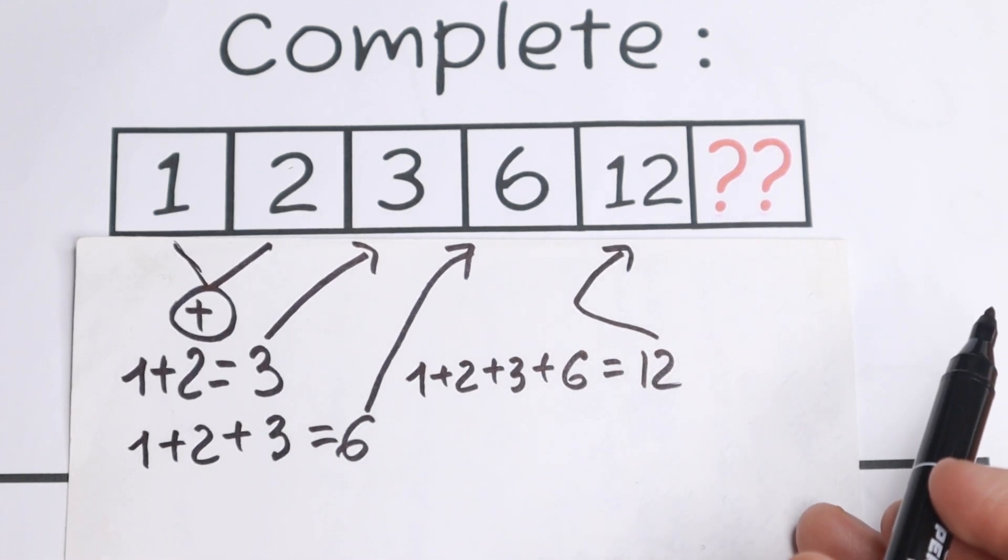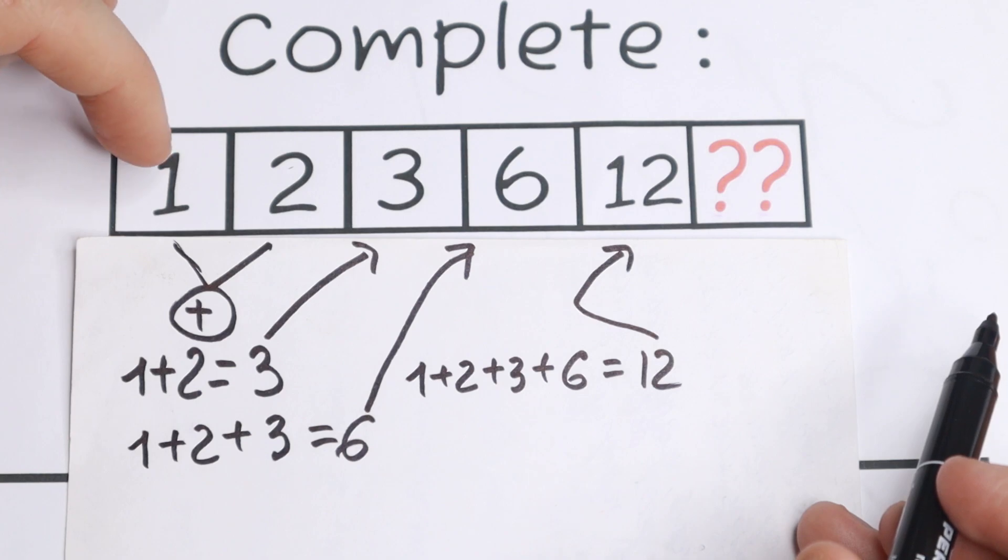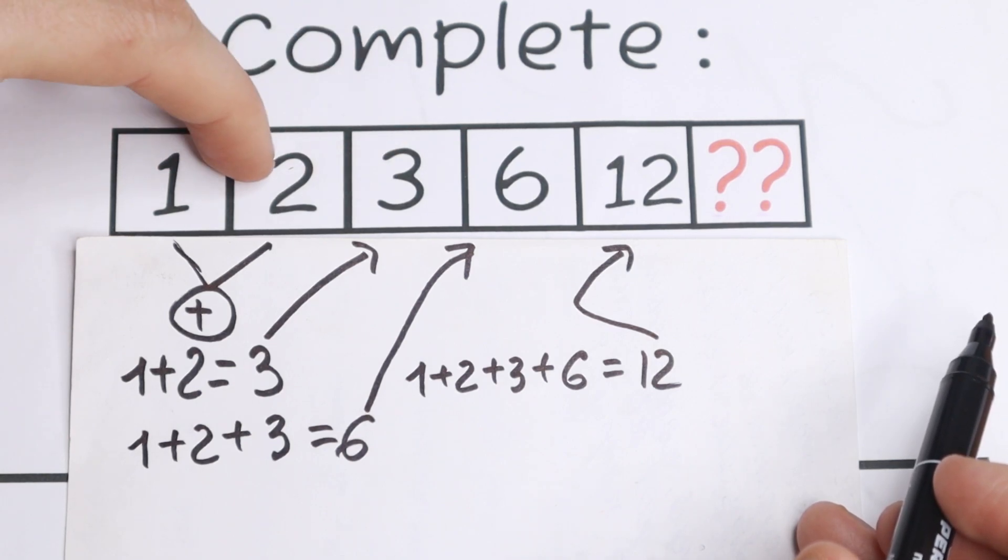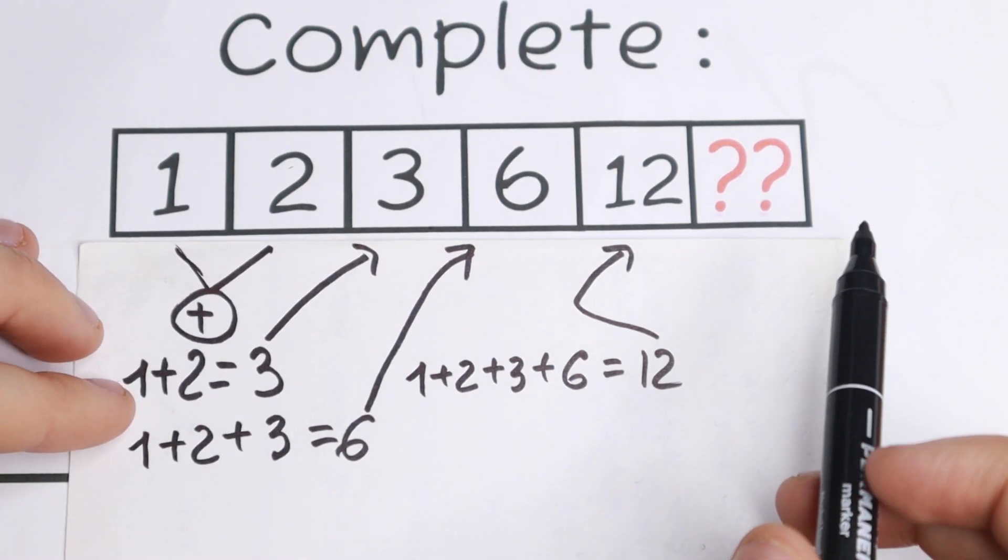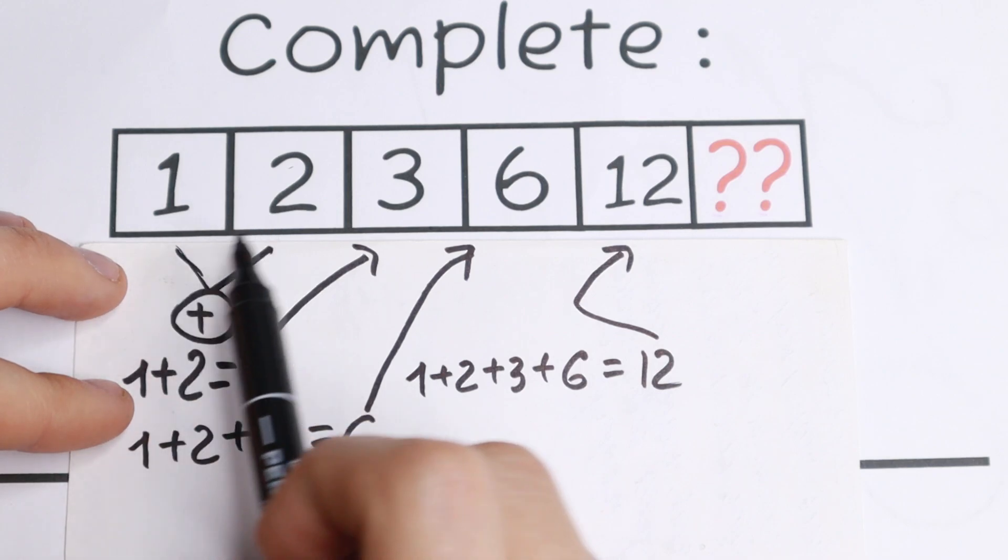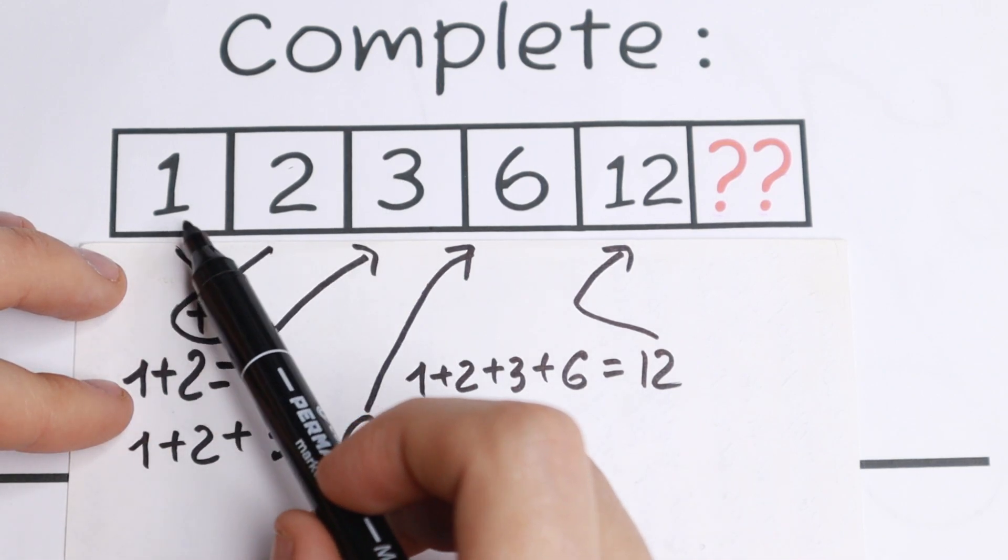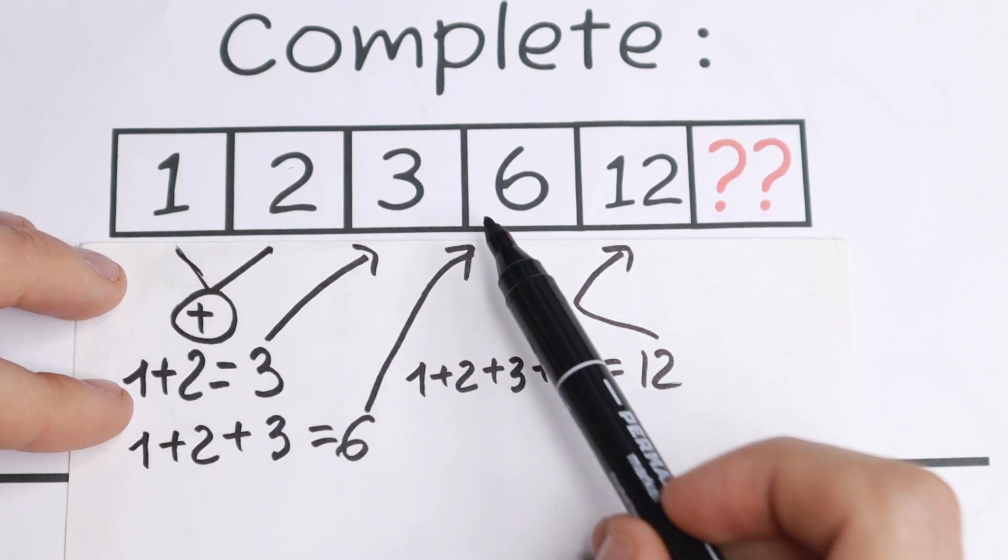So the next number: right here we will have 1 plus 2 equals 3. 1 plus 2 plus 3 will be 6. 1 plus 2 plus 3 plus 6 will be equal to 12. So the pattern between all of these numbers: with the sum of the first two numbers, we will have the third one. With the sum of the first three numbers, we have the fourth one.